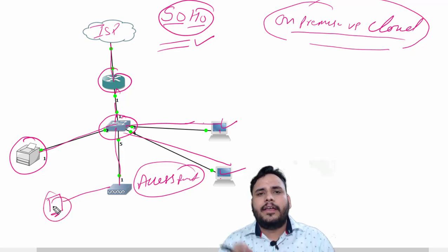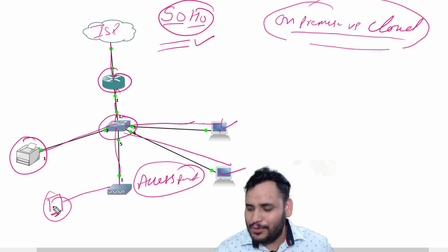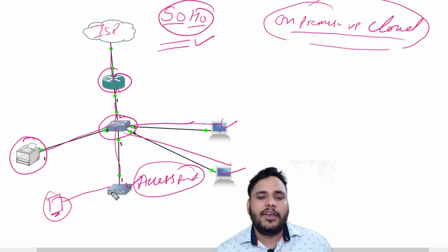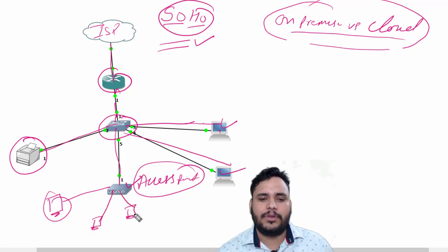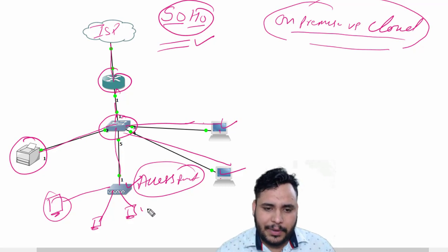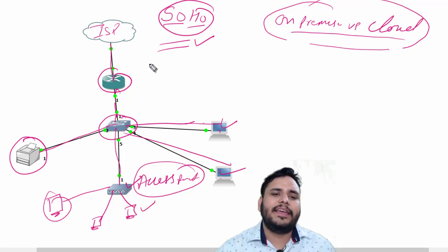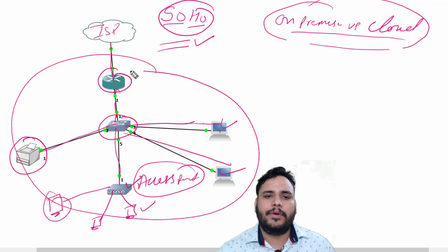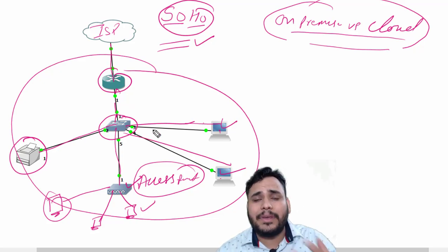RJ45 connector is not going to put into my mobile. So that's why I can use access point here. You can connect with your laptops, your smartphones, your tablets. So anything which is going to connect within one premises that is called SOHO design.